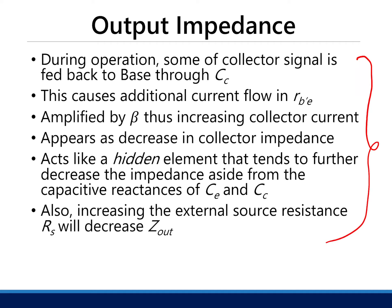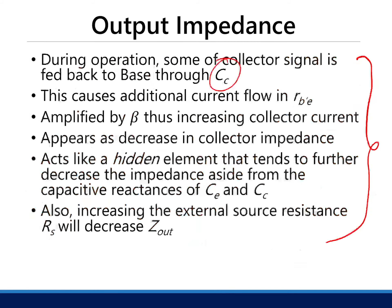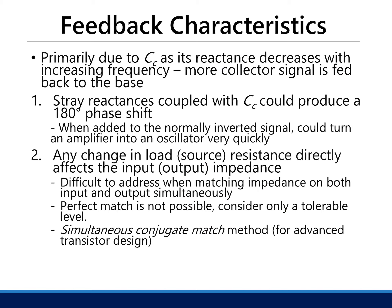The output impedance can also be characterized. Since RCE is large, it approximates an open circuit, leaving CC and CE in parallel with the source resistance, RBB-prime, and RBE-prime. Typically, output impedance decreases with frequency because at high frequencies capacitors are shorted. Since amplifier gain is largely dependent on Zout, a decreasing Zout also decreases the gain. Additionally, feedback is achieved through CC, feeding a signal back from output to input.